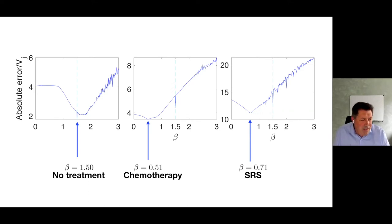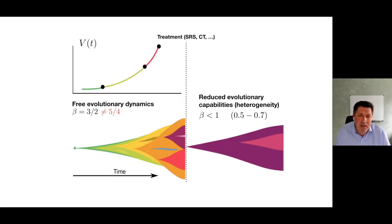So what does this mean? Essentially, before treatment you have the possibility of having evolutionary dynamics because you have a broad variety of different genotypes. You have phenotypic plasticity, many things down there. That allows for evolutionary processes so you have beta larger than 1. What happens after treatment is you have reduced evolutionary capabilities. You have substantial reduction of heterogeneity. This is why exponents beta are substantially smaller than 1. Somehow this is a macroscopic manifestation of what's going on down there.